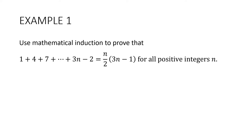Here's our first example. Use mathematical induction to prove that 1 plus 4 plus 7 plus dot dot dot plus 3n minus 2 is equal to n over 2 multiplied by 3n minus 1, for all positive integers n. Now, this is an arithmetic series. The first term is 1, the common difference is 3. This is the nth term: 3n minus 2, and this is the sum of n terms.